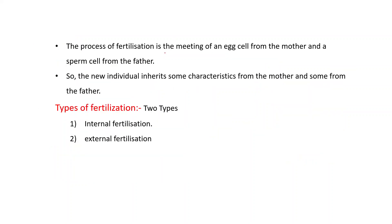The process of fertilization is the meeting of an egg cell from the mother and a sperm cell from the father. So the new individual inherits some characteristics from the mother and some from the father.